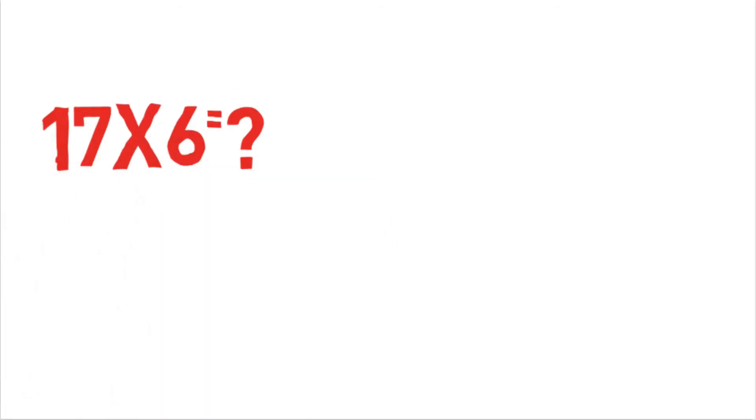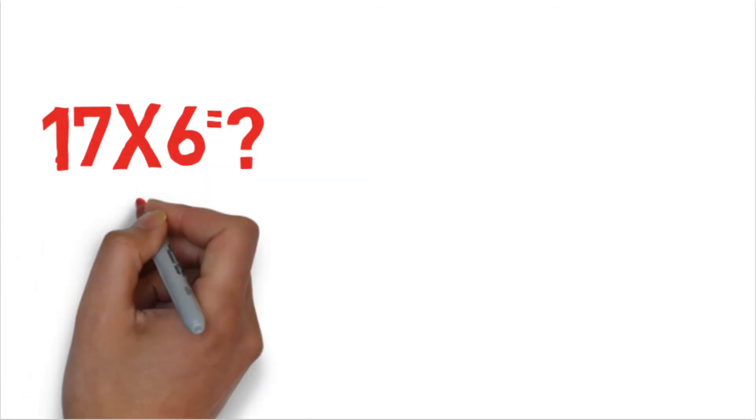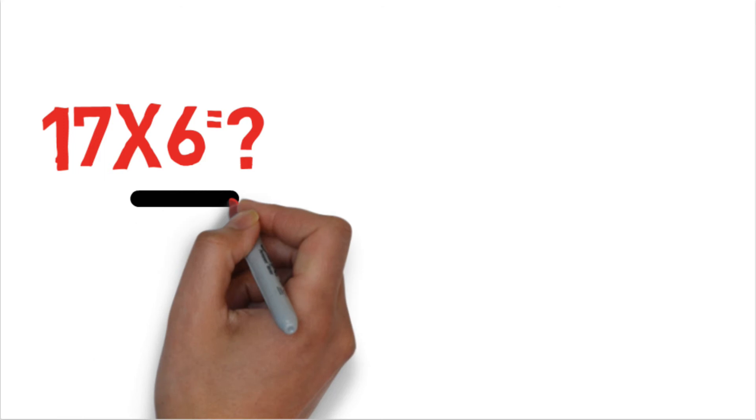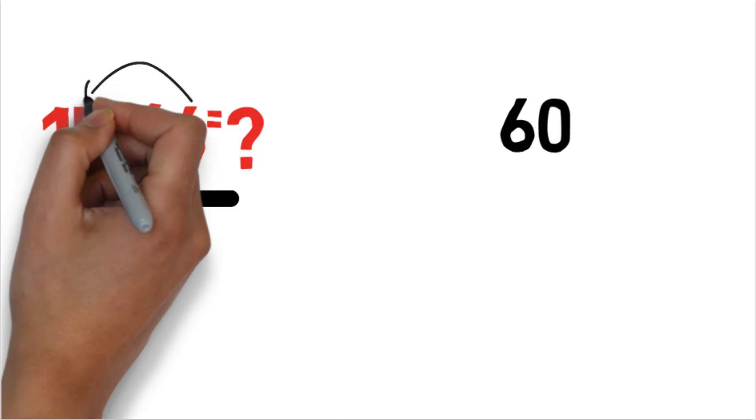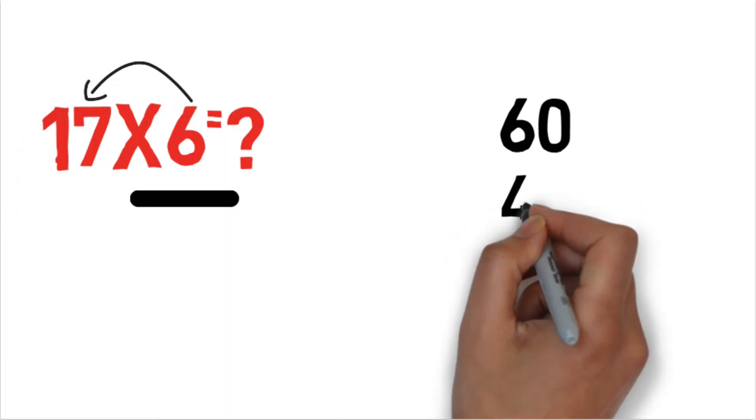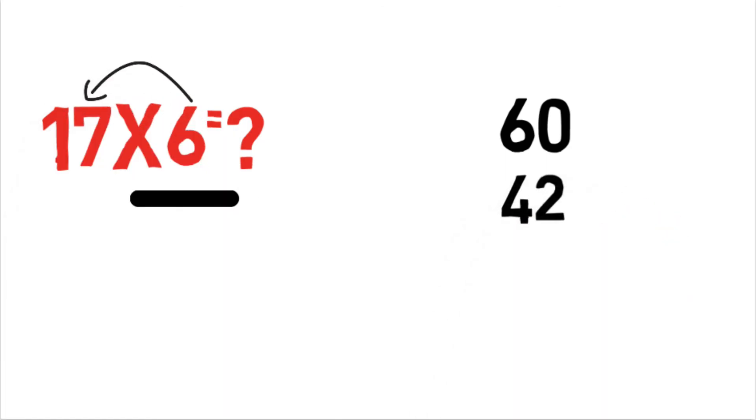You can find solutions like this in a very simple way. 17×6. So 6 is the unit digit: 6, 0 is 60. 7×6 is 42. So if I add both of these numbers, I'll get the answer, and the answer is 102. 17×6 is 102, very very simple.